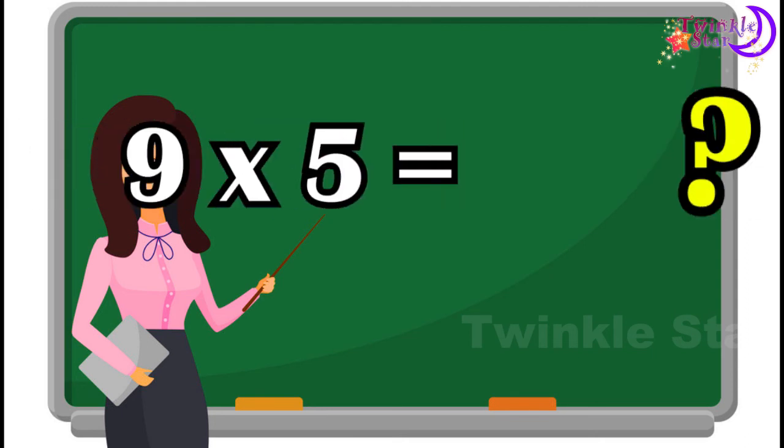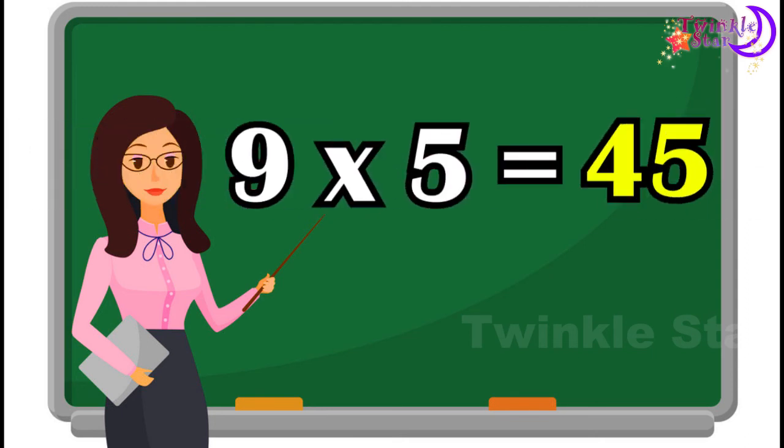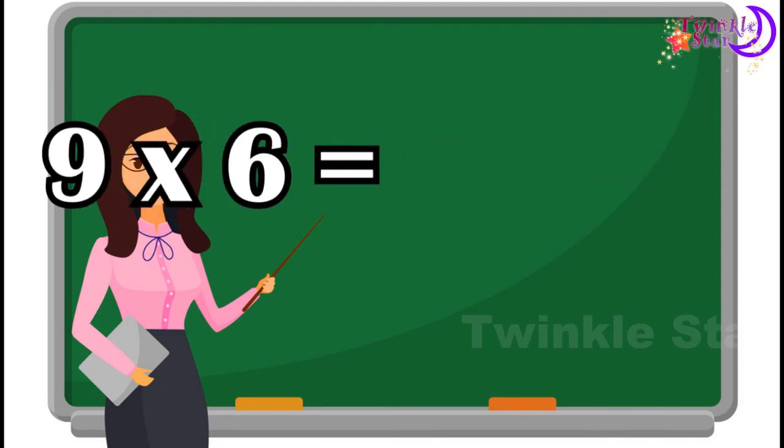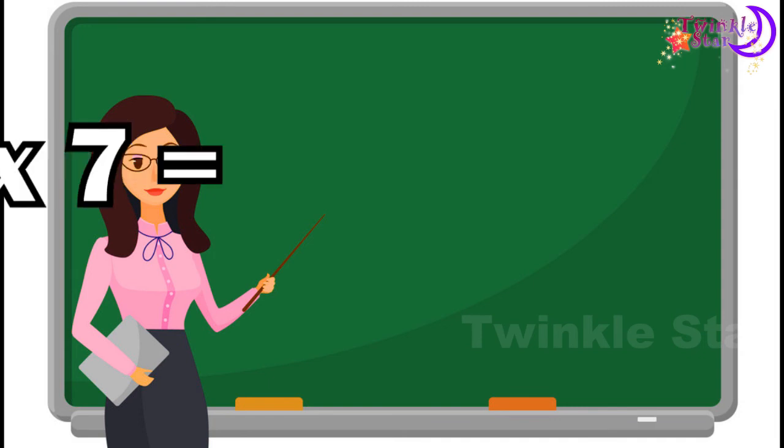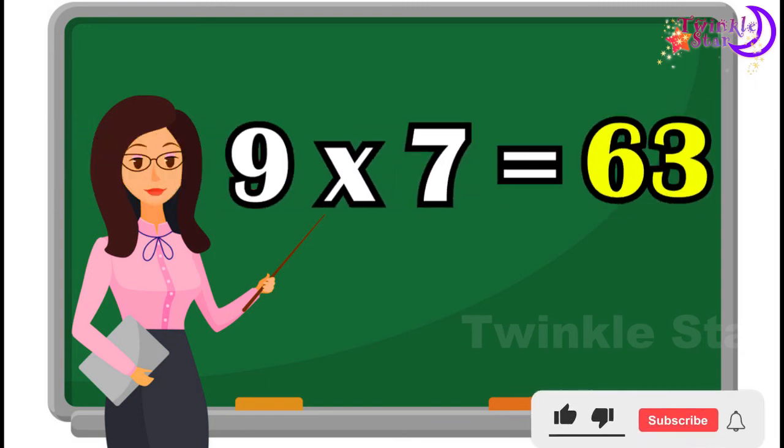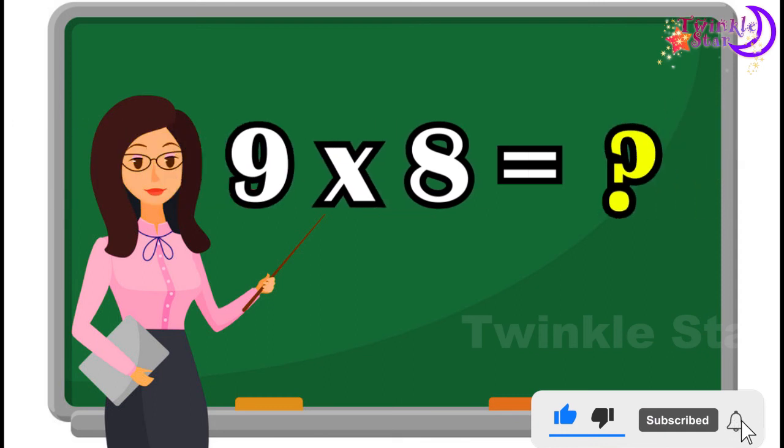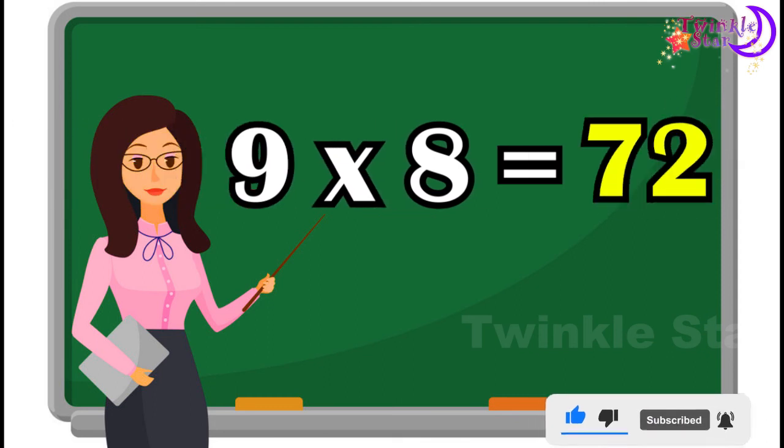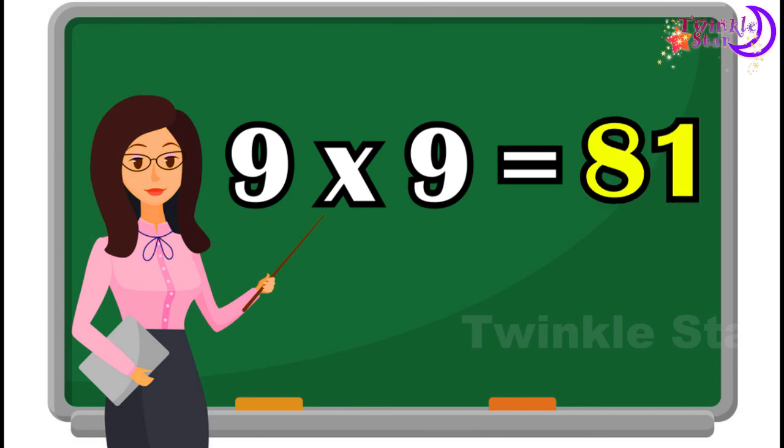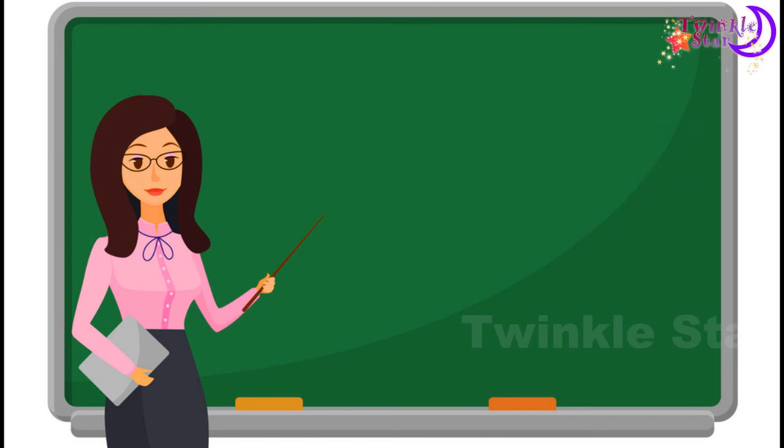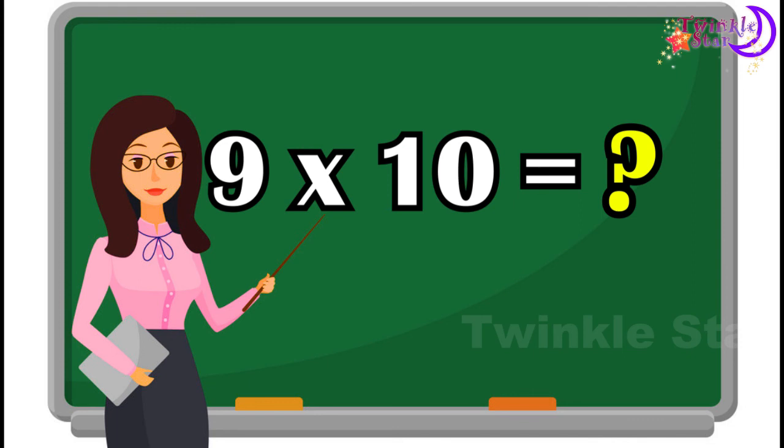9 4s are 36, 9 5s are 45, 9 6s are 54, 9 7s are 63, 9 8s are 72, 9 9s are 81, 9 10s are 90.